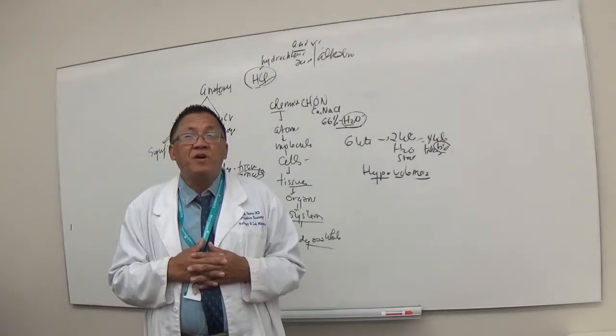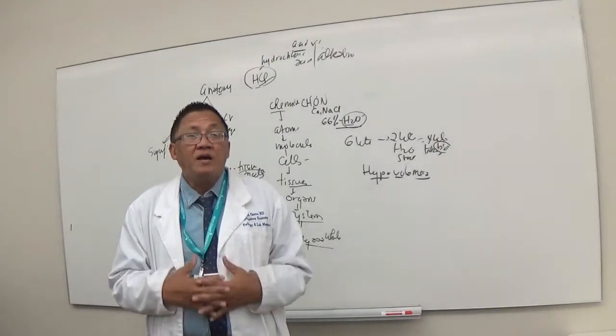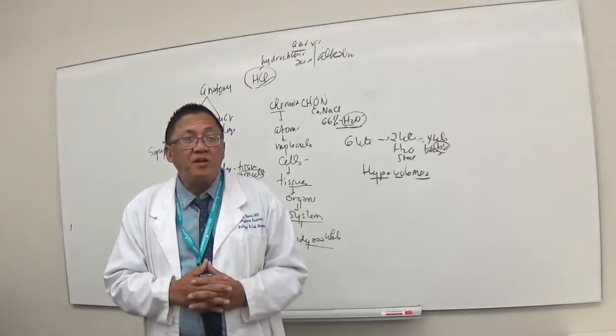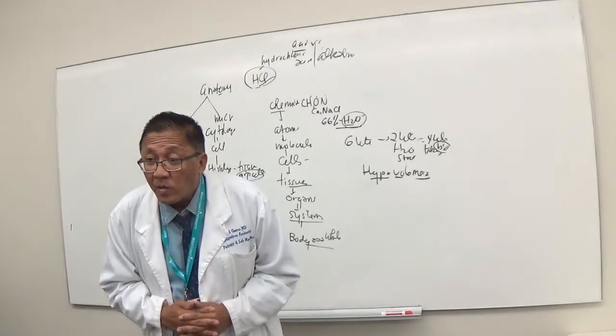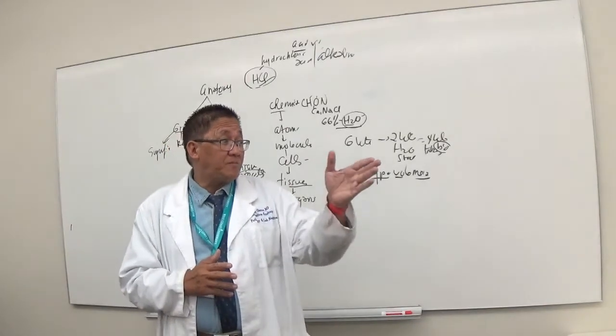Now remember, when you say pericardium and pleura, and remember in the abdominal organs it's called peritoneum, what kind of membranes are these? They're serous membranes. And what do serous membranes secrete? Serous fluid.